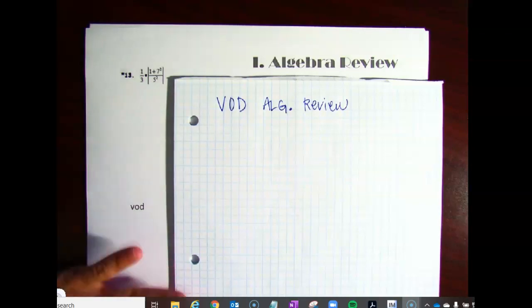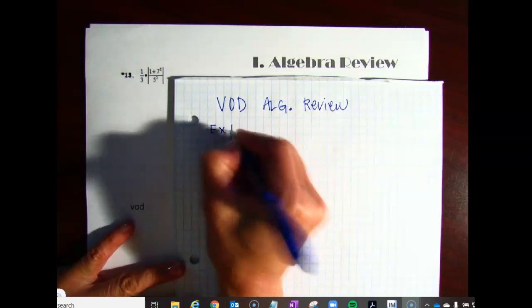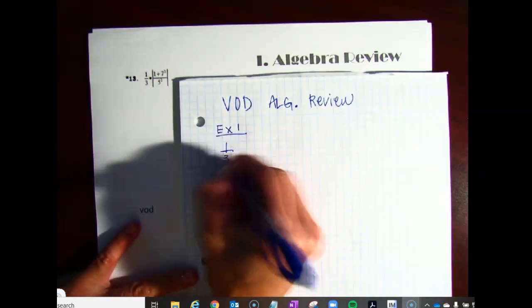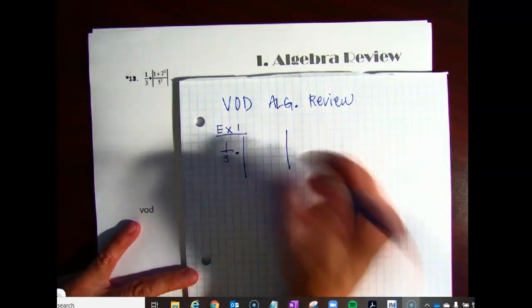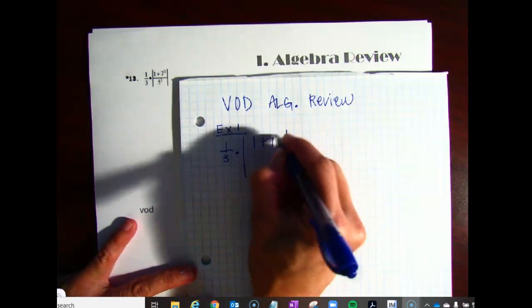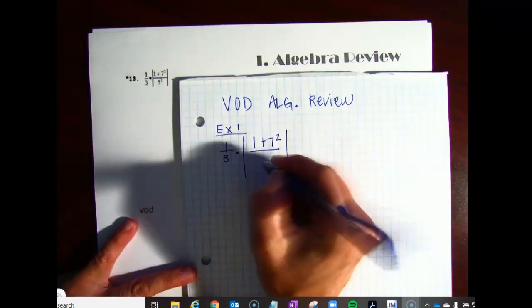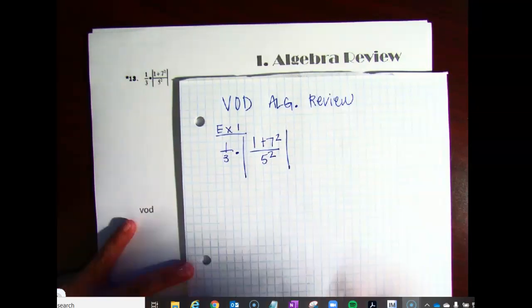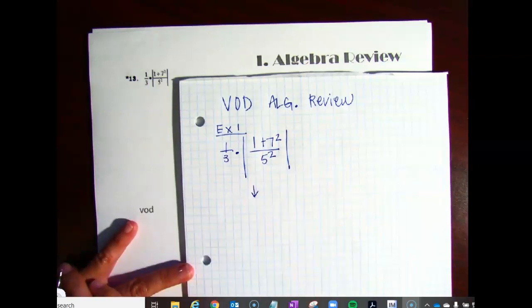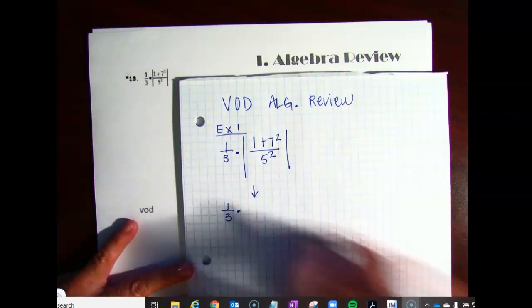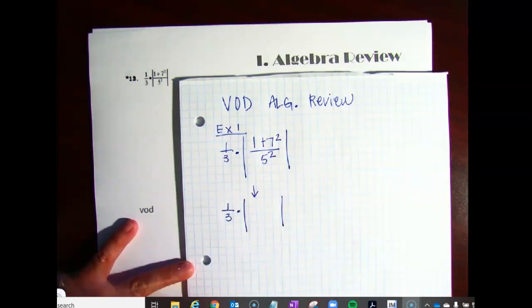So again, I'm going to just talk about this first example here. This is going to be one-third times, and remember, those are absolute value bars. Remember, absolute value is always positive. It looks like we're going to have a positive answer under here anyway because nothing's going to be negative with that fraction. So remember, you have to completely knock out groups first. So this one-third is just going to hang out for a moment. And we're going to do the operations that are in those absolute value bars.